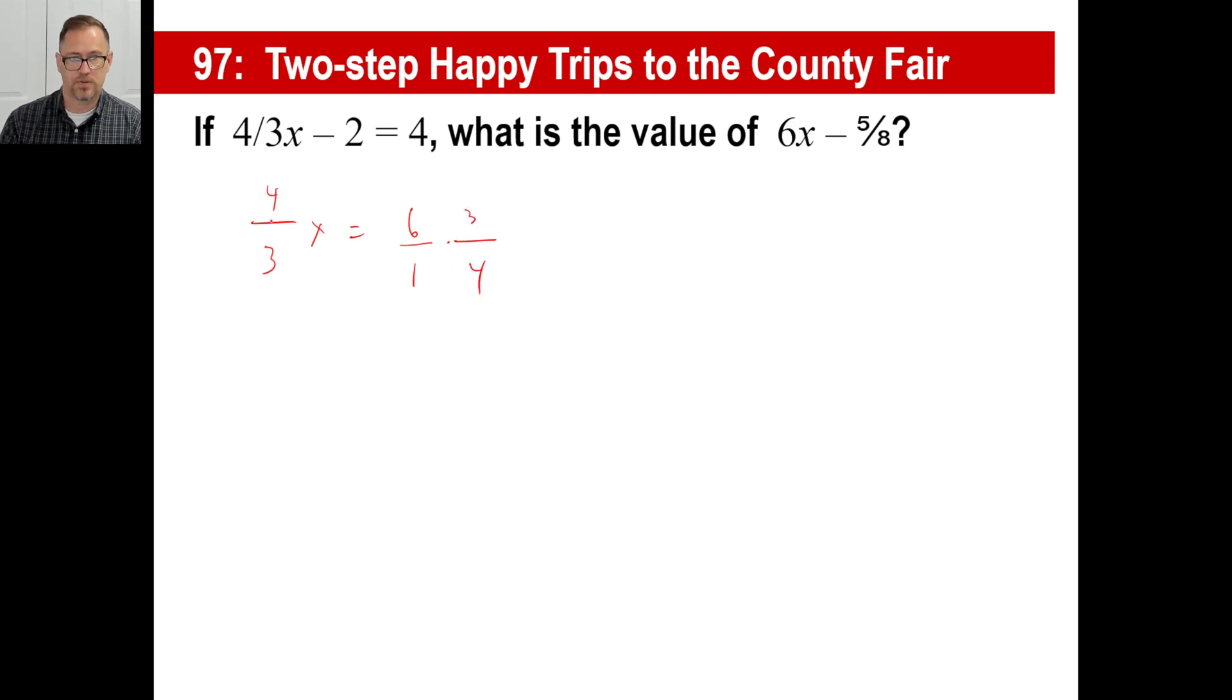We can just do this like this. Times 3 fourths. No, that's gone. So let's just knock this down a little bit here. That's going to be 2 goes into 6 three times. 2 goes into 4 twice. So 3 times 3 is 9 over 2. That is the value of x.